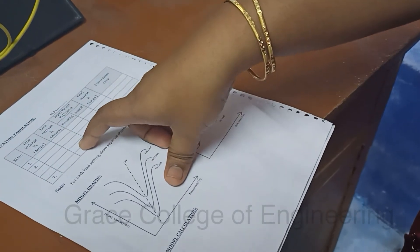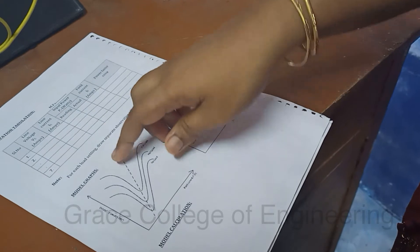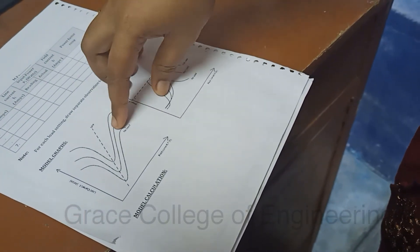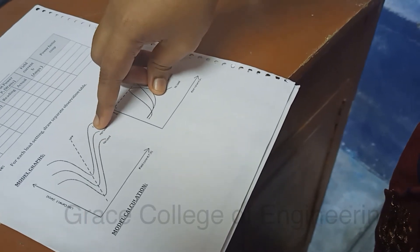By using these values you want to plot the graph, that is for the field current and the load current. You want to draw the inverted V curve as well as the V curves.